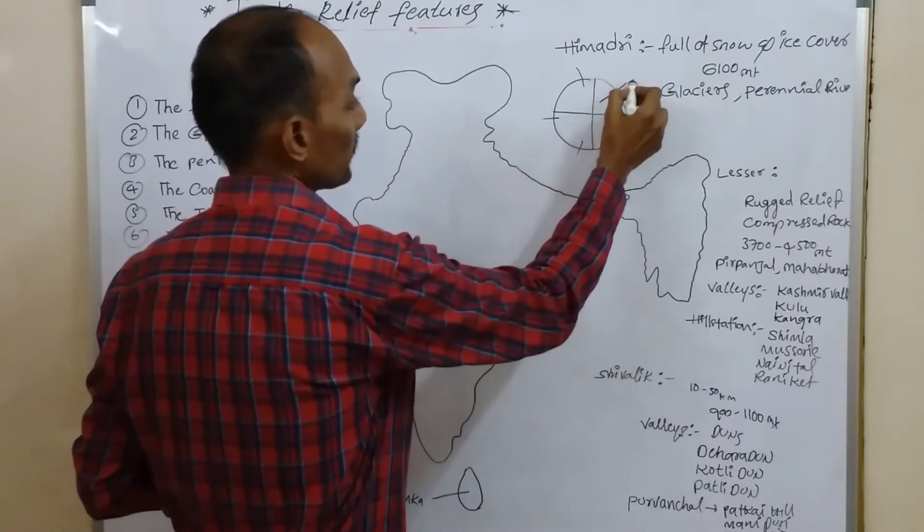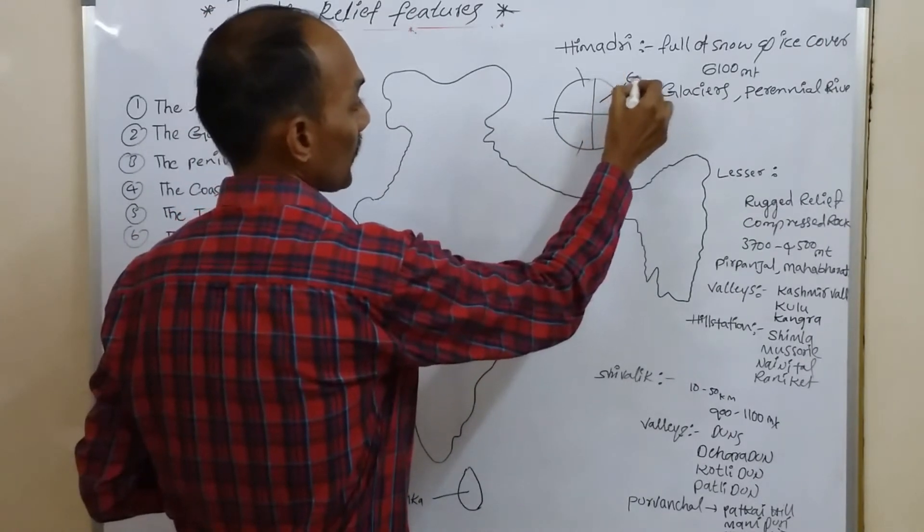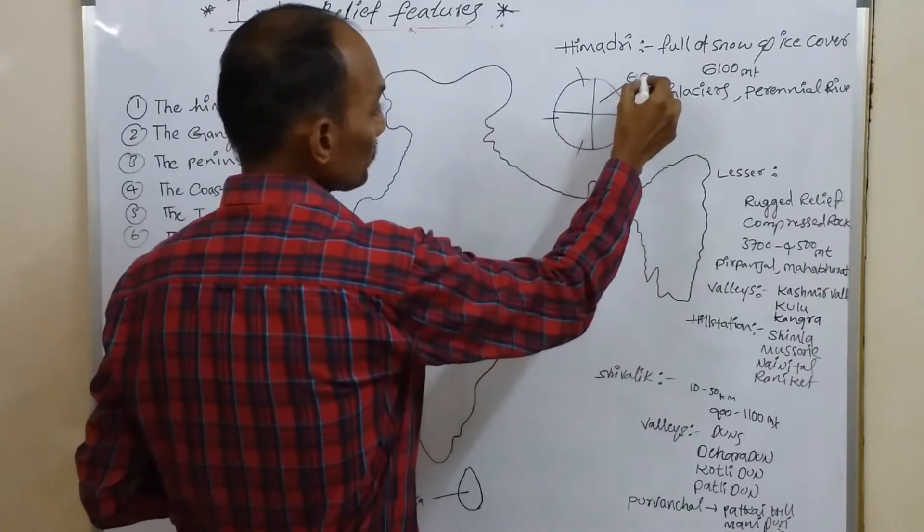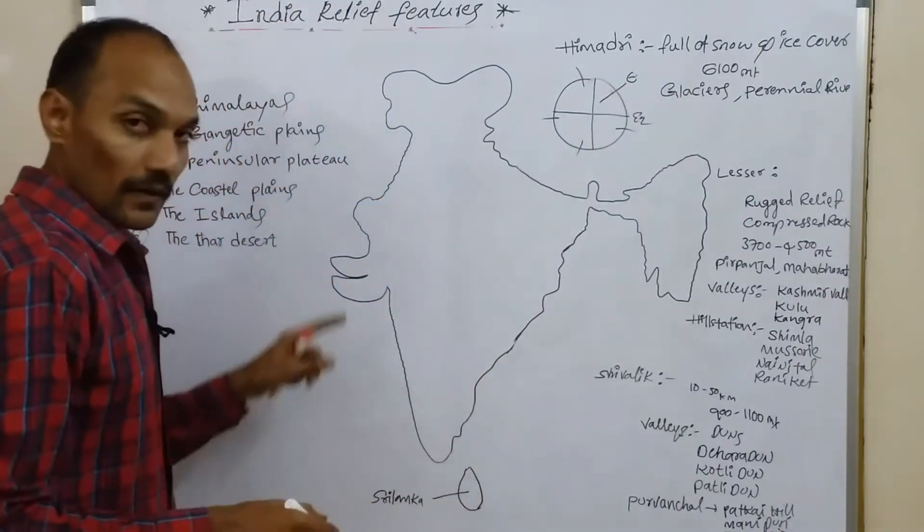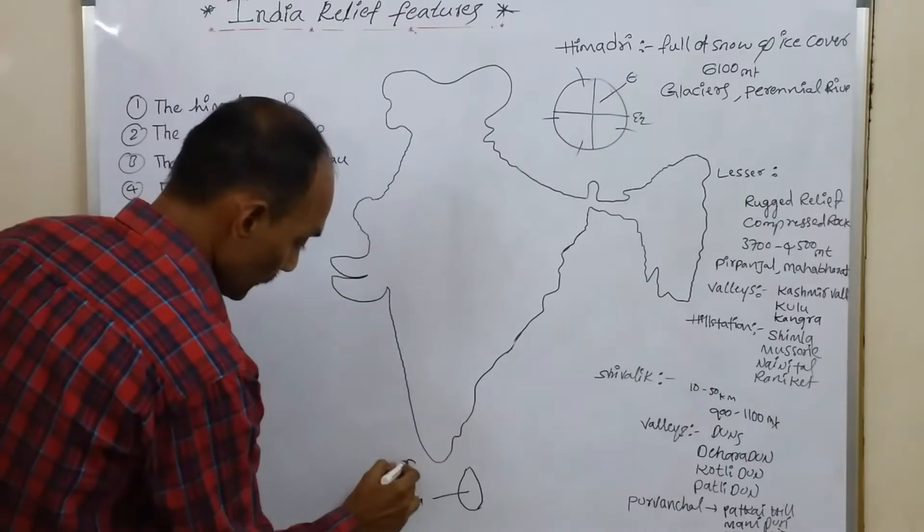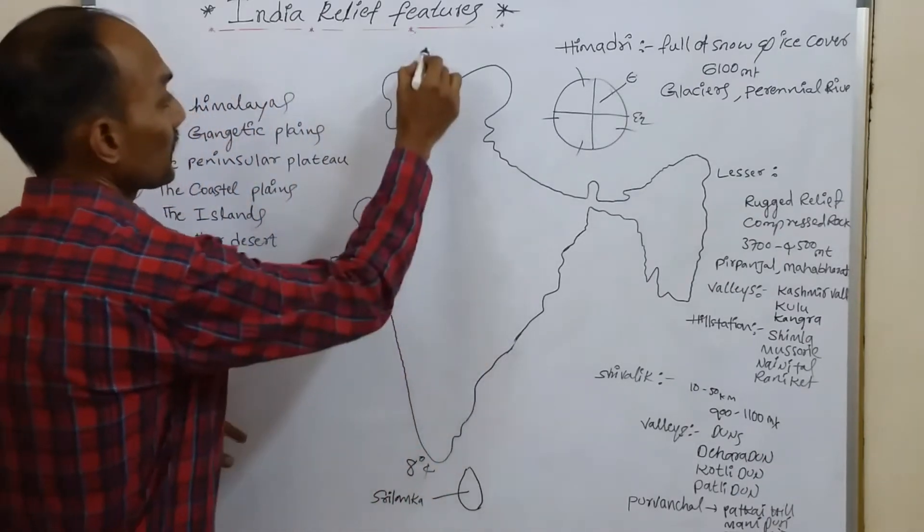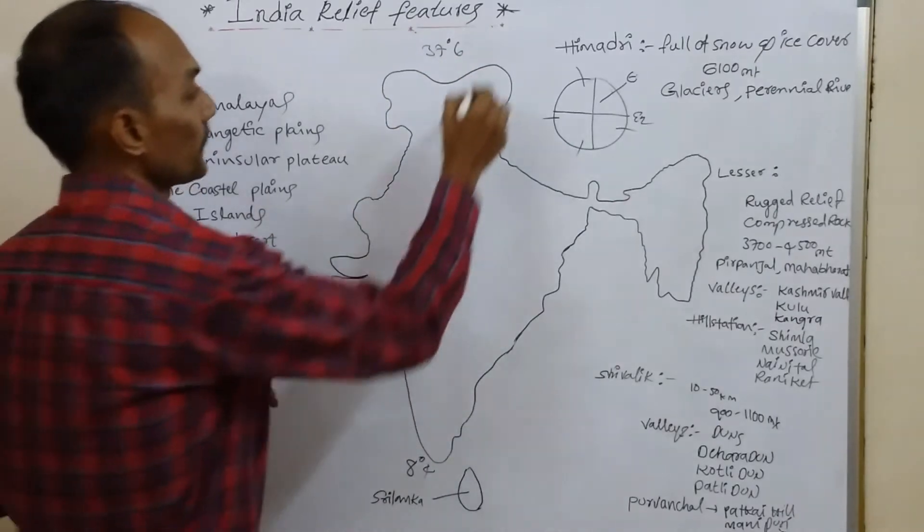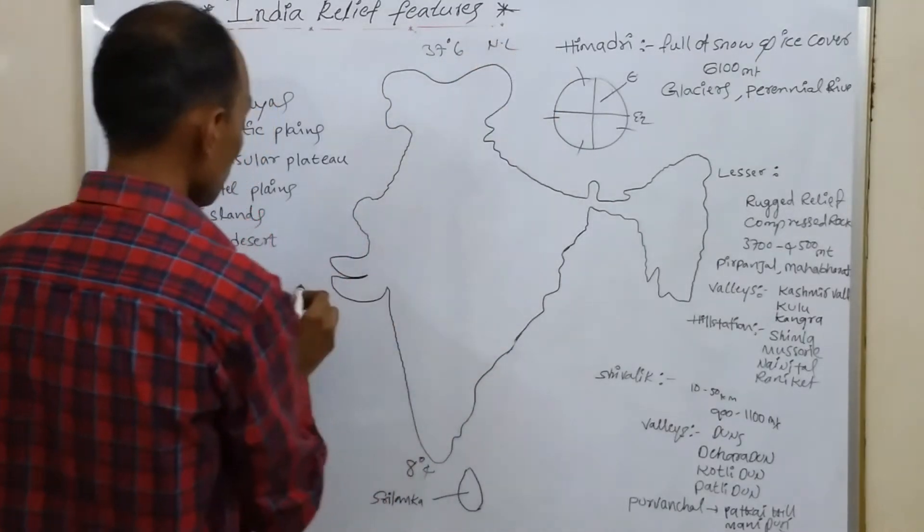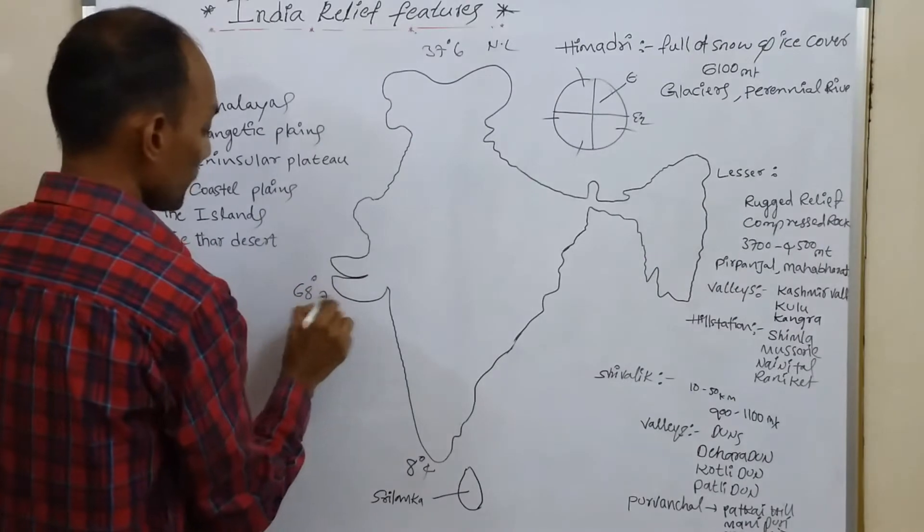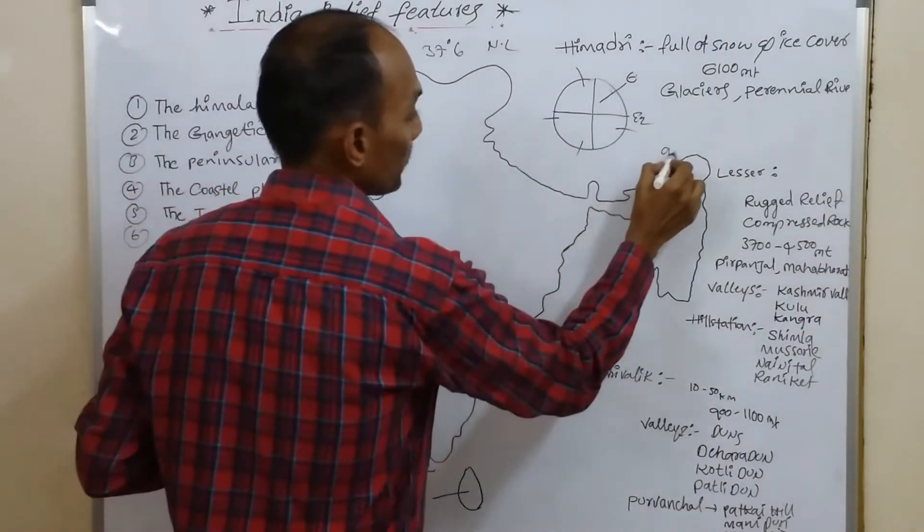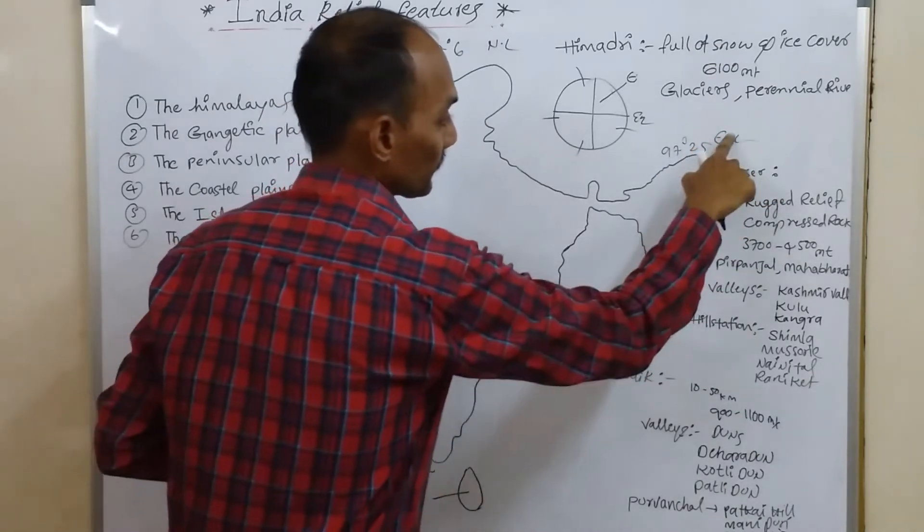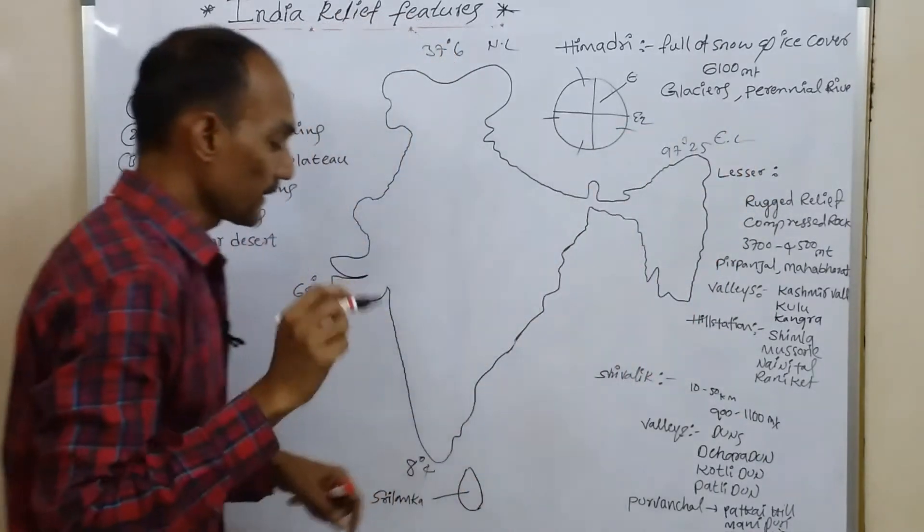Our India lies in northeastern hemisphere. Our India lies between 8 degrees 4 minutes to 37 degrees 6 minutes in northern latitude and 68 degrees 7 minutes to 97 degrees 25 minutes in eastern longitude.